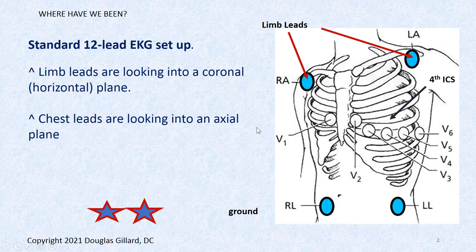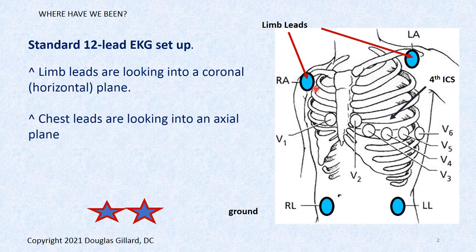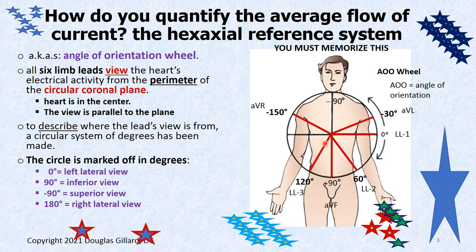Remember, we talked about how to set this up. Limb leads are created by this little box right here. You can put them all the way down at the wrists. Chest leads we haven't talked about too much — they go mainly in the fourth and fifth intercostal spaces. Limb leads are looking into a coronal plane; chest leads are looking into an axial plane. You're going to miss a lot of questions if you don't understand this.